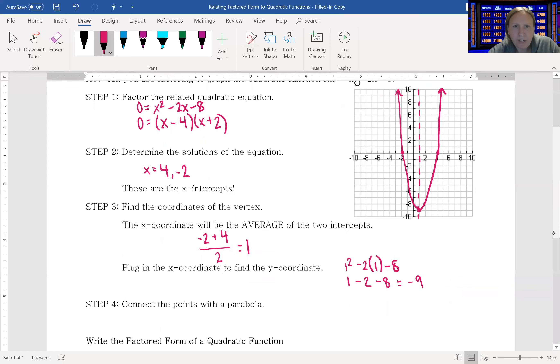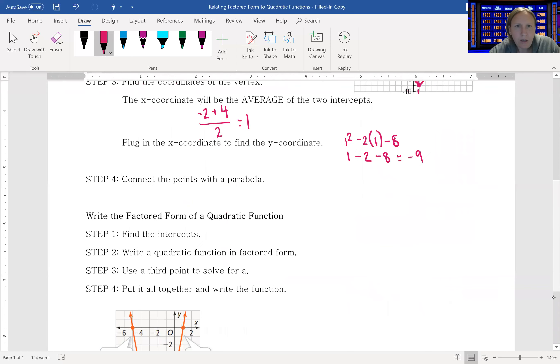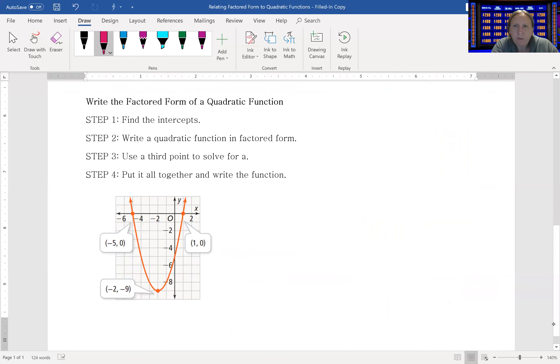And our second example, we are going to write the factored form of a quadratic function. So step one is to find the intercepts. We have our graph down here. Our intercepts are at -5 and 1.